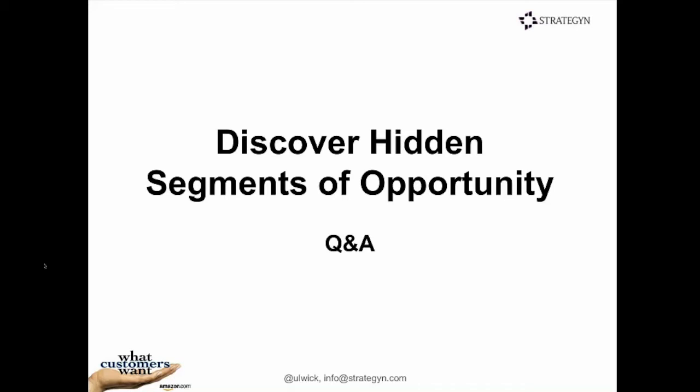Next question: how precisely stated do the outcomes need to be for segmentation to work? Precision, in our view, is everything — these are the key inputs into the innovation process. If there's deviation from the standard, things can go wrong. If solutions appear in statements, for example, we find they factor and cluster differently and can impact how the rest of the process runs. We are very focused on ensuring a robust set of outcome statements that follow the rules we've defined.